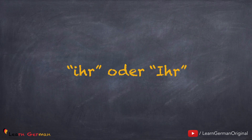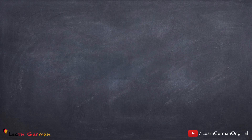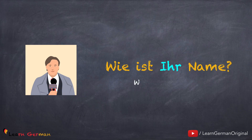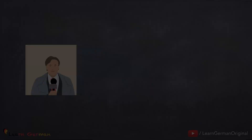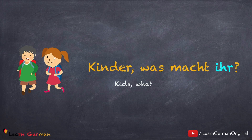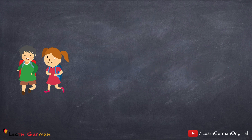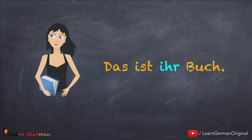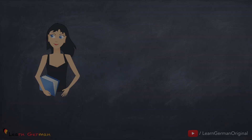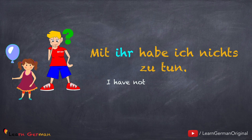Ihr oder Ihr. Before we get into the details, let's look at a few examples. 'Wie ist Ihr Name?' Here you can see the use of Groß Ihr. Now, a few examples with klein ihr: 'Kinder, was macht ihr?' and 'Das ist ihr Buch.' And here's another example: 'Mit ihr habe ich nichts zu tun.'